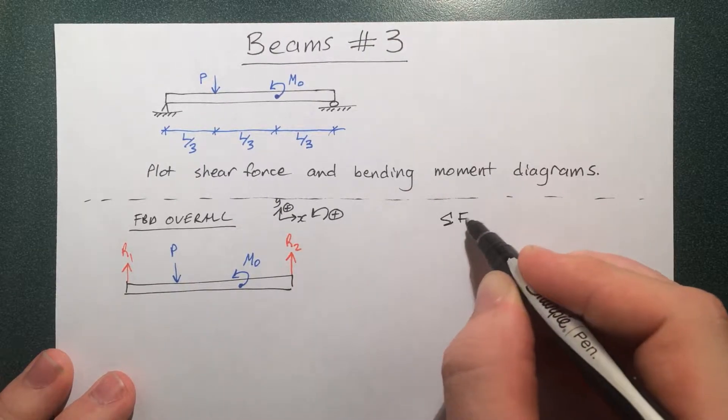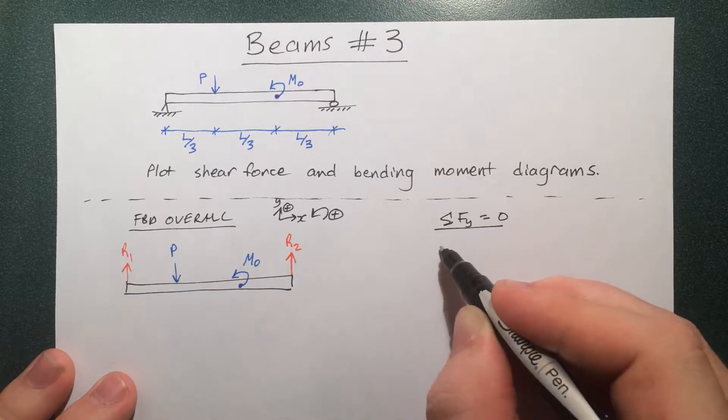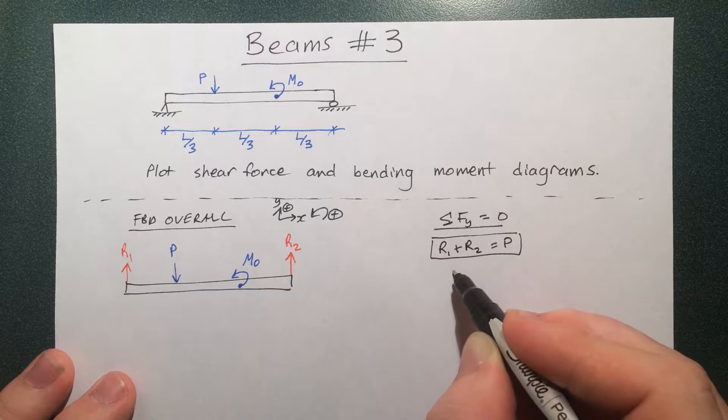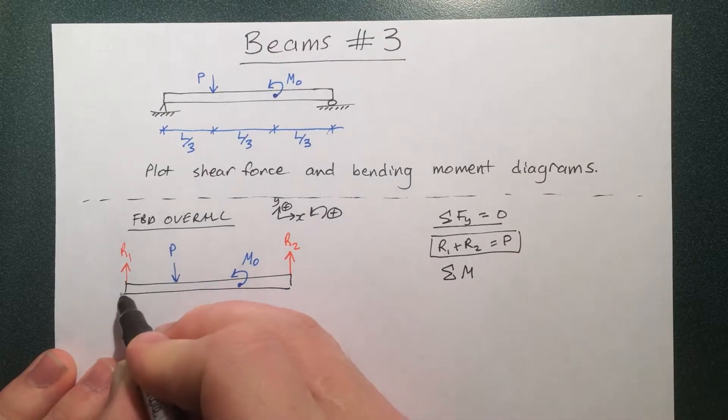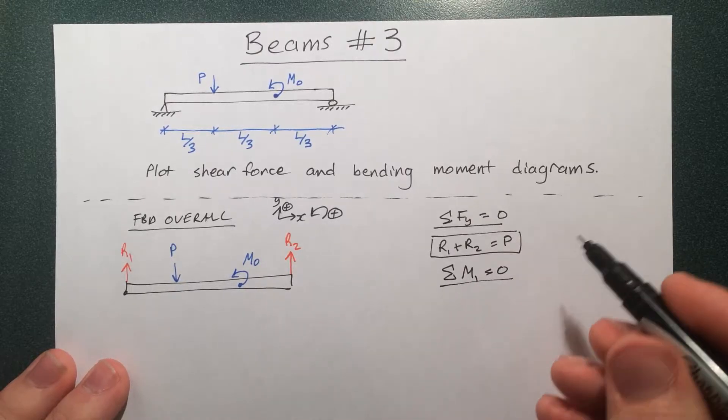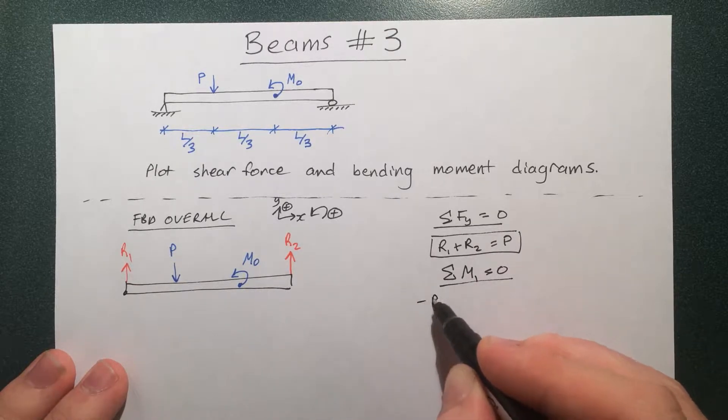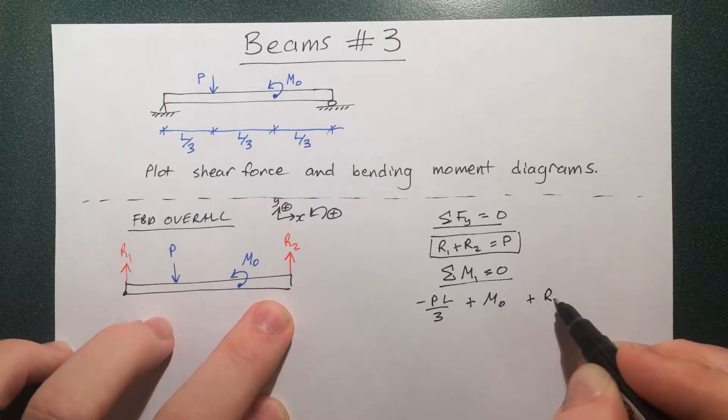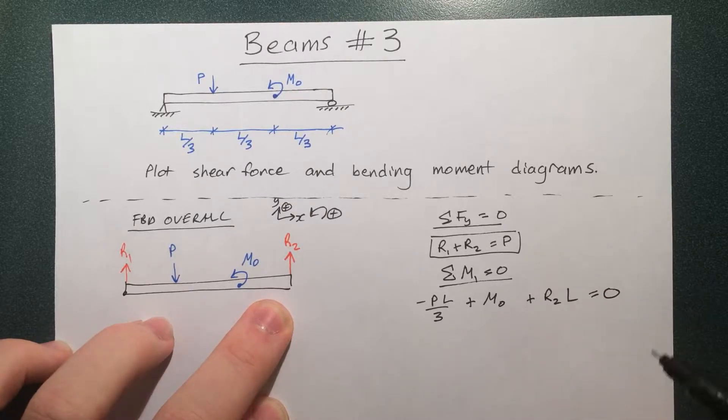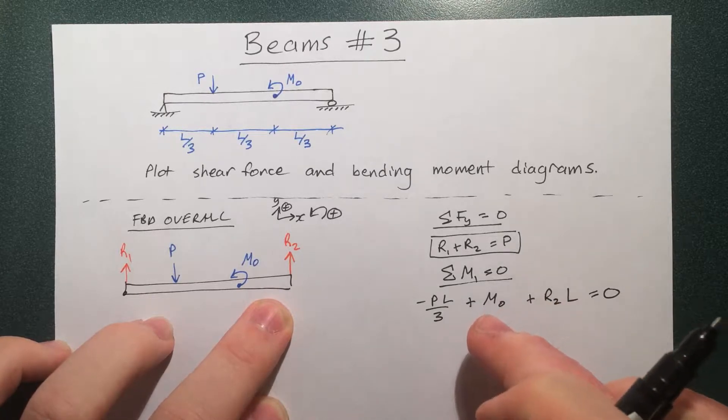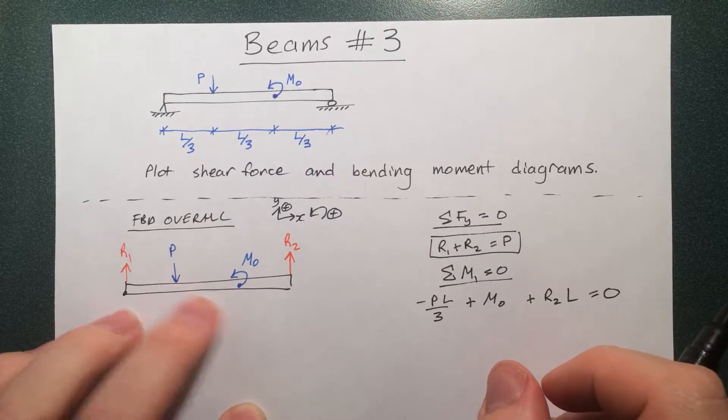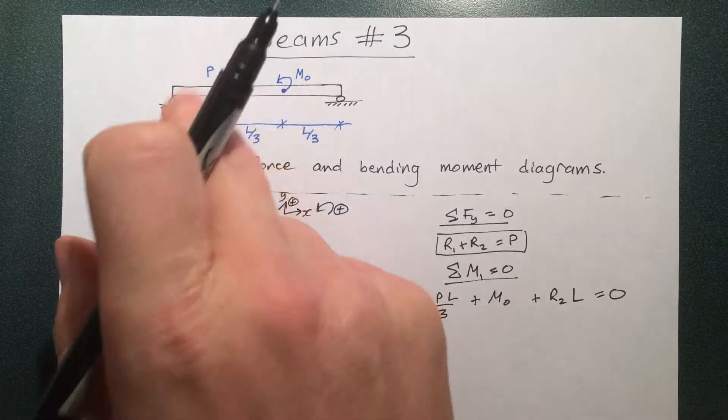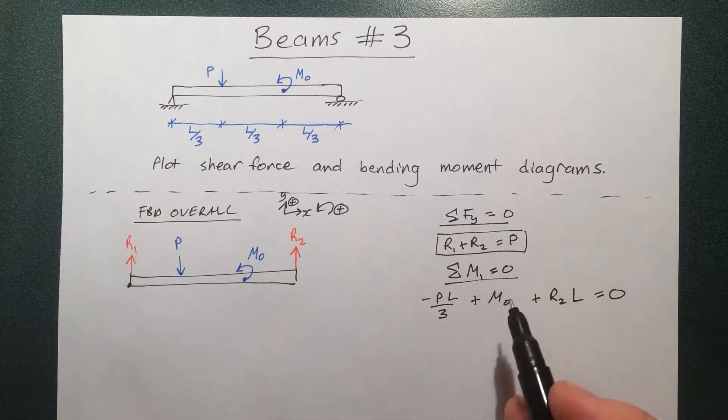So let's do sum of forces, sum of moments. I'll do it around this point here, equals zero. Now I just included this point moment without multiplying it by length because this moment could be applied anywhere if we're just doing this overall moment equation. Now you can't just apply it anywhere when we do the cuts later, but for the overall, you just include it as part of your equation.